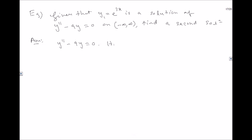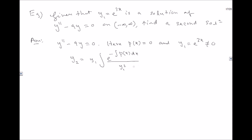Here p(x) = 0 because there is no y' term, and y₁ = e^(3x) is not equal to 0 everywhere, so all conditions are satisfied. We can substitute into the formula: y₂ = y₁ · ∫(e^(−p(x)dx) / y₁²) dx.